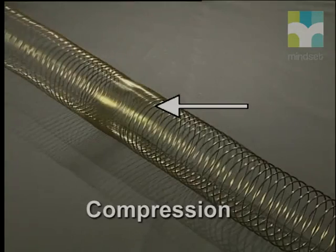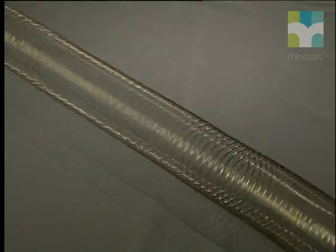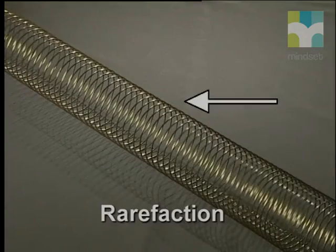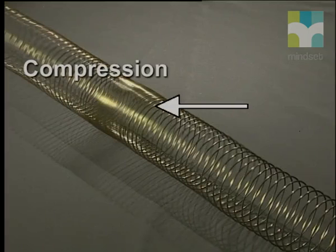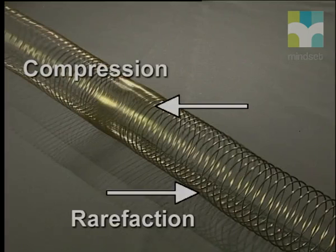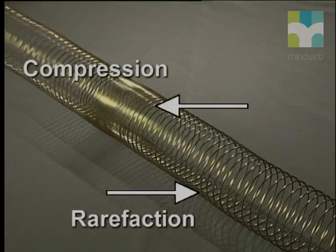This wave consists of a series of compressions, where the coils of the spring are squashed closely together, and rarefactions, where the coils of the spring are stretched further apart. The coils of the spring are compressed when the spring is pushed in and they are stretched apart when the spring is extended again. The compressions and rarefactions alternate along the length of the spring.